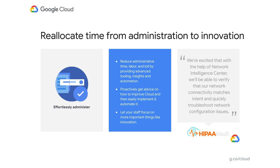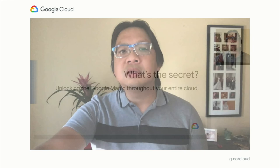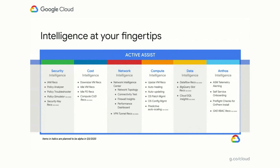Active Assist will help you by using automation intelligence to bring key actions right to your fingertips. It takes away the guesswork and the mystery that's normally required to operate your cloud. For example, customers like Hippovolt were able to use Network Intelligence Center to quickly troubleshoot network configuration issues. To show you some practical examples of this, I'm going to turn it over to Dima Melnick, who's a product manager on our team.